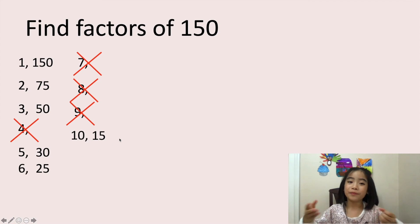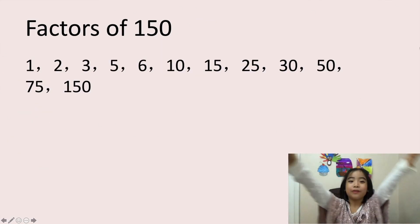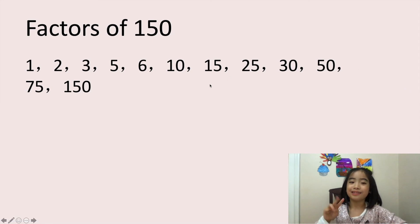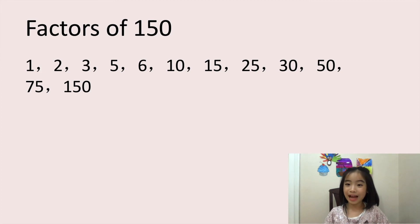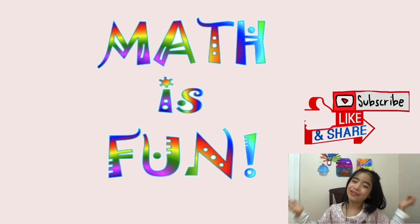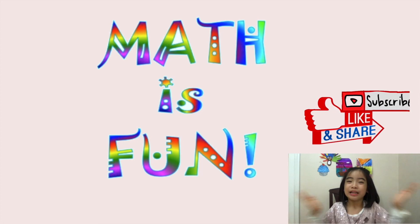Now there are more factors like 11, 12, 13, 14, and I'll leave that for you to figure out. So after finding all the factors of 150, let's say all the factors out loud together: 1, 2, 3, 5, 6, 10, 15, 25, 30, 50, 75, and 150. So that's all for today. Did you think this was fun? Well, I did. Don't forget to subscribe.